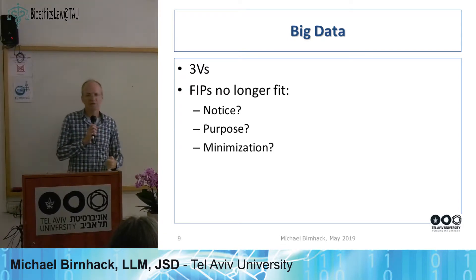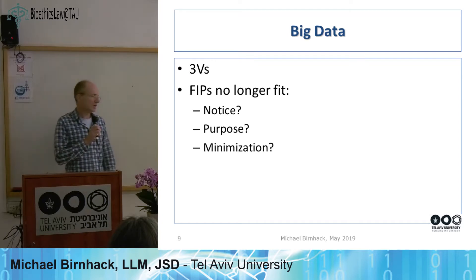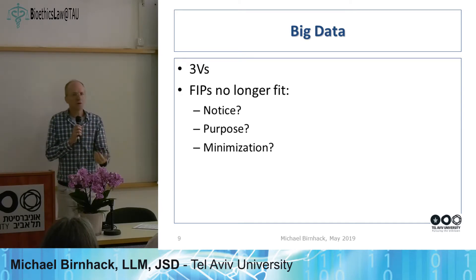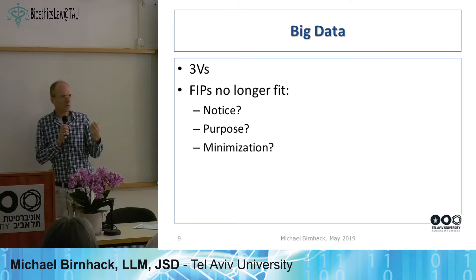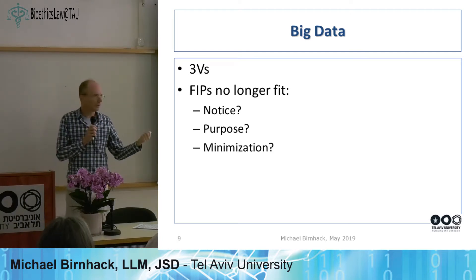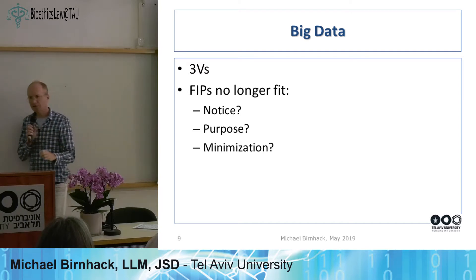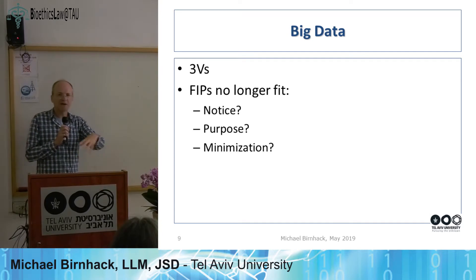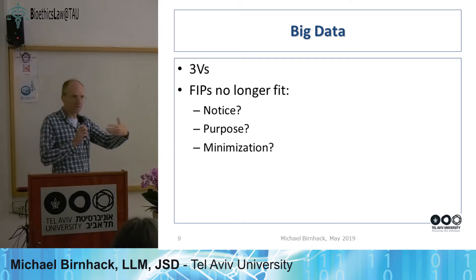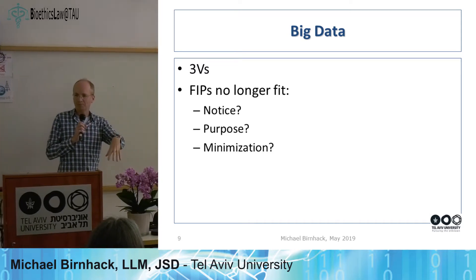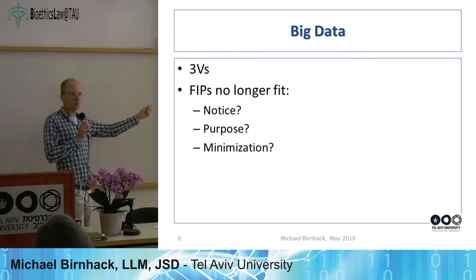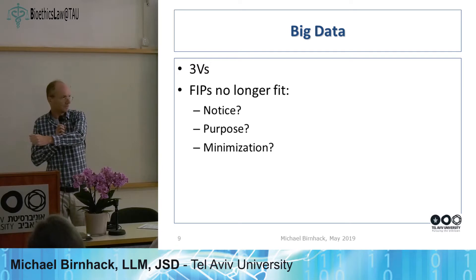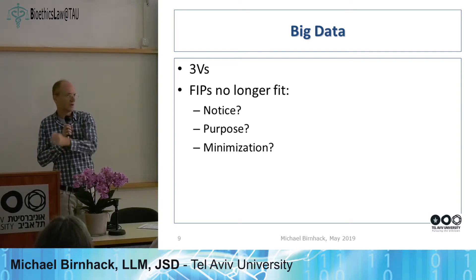How can we notify a person that we will be using their data, for what purpose? We have no idea, because the logic of big data is: collect as much data as you can and let the algorithms find previously unforeseen connections. I might collect data for one purpose and use it for something quite different because the algorithms suddenly found some connection.